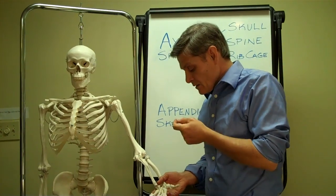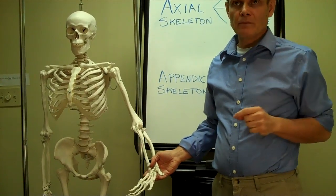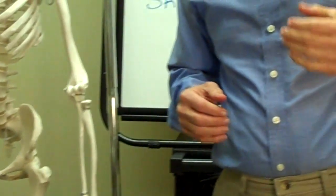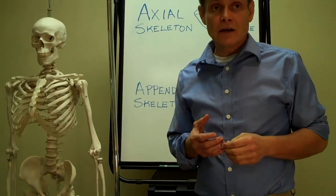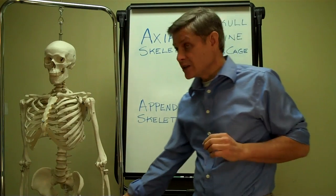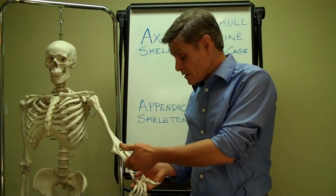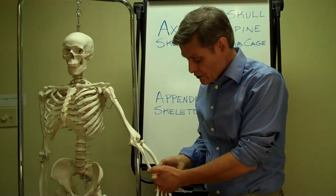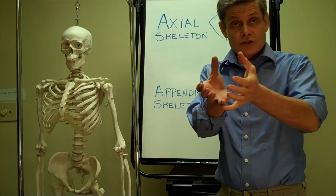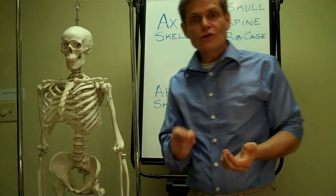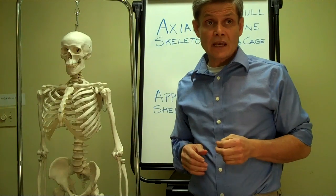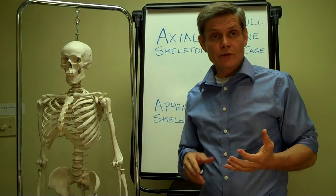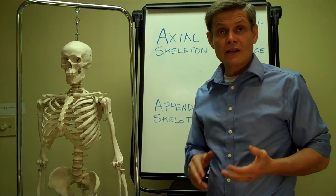Let's go back to the wrist. The eight carpals — you may be familiar with that name from a condition called carpal tunnel syndrome, which happens a lot in folks who work with computers. Massage therapists encounter many clients with that condition. The eight carpals actually form a tunnel, and there is a nerve that goes through that tunnel and supplies the tissues of the hand. When those bones go out of place and become misaligned, it can entrap that nerve and produce the pain, numbness, and tingling associated with carpal tunnel syndrome.